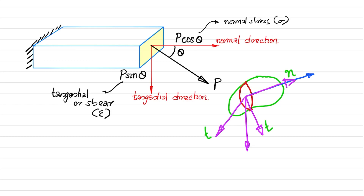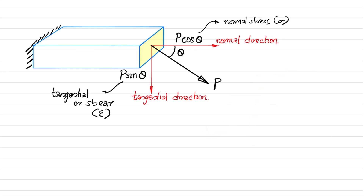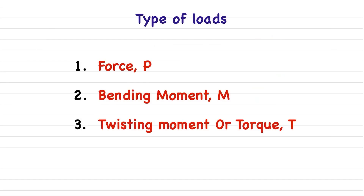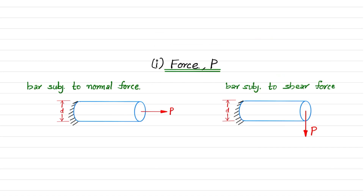This concept you have already studied in advanced mechanics of solids. So basically you can classify stress into two types: normal and shear stress. Before going into the detailed classification, we will look at the different types of loads. There are three basic types of loads in MOS: one is force, another is bending moment, and the third is twisting moment or torque. We have already seen the force — normal force as well as shear force — while discussing the concept of stress.